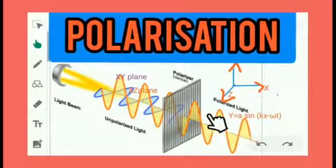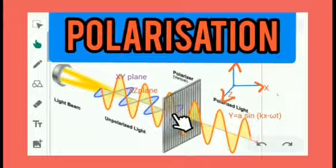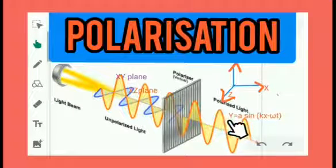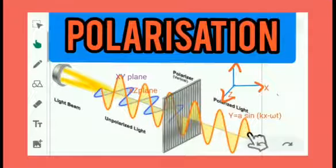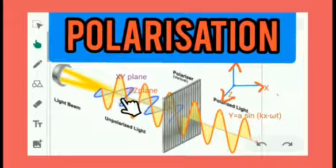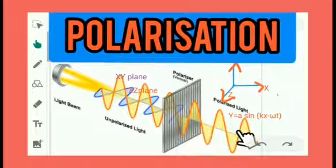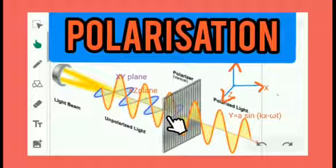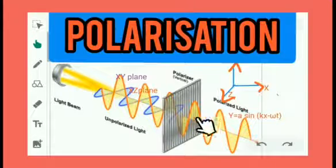Here the light is polarized. The phenomenon of restricting the vibration of the light vector in a particular direction — in a plane perpendicular to the direction of propagation of light — is called polarization. If the pass axis is in the x-y plane, the vibrations are in the x-y plane. Suppose the pass axis is in the x-z plane; then the vibrations in the x-z plane will be present and x-y plane vibrations will be absent.